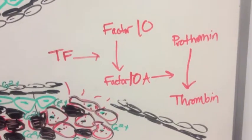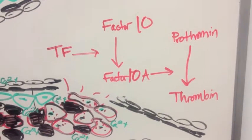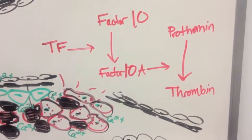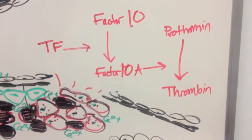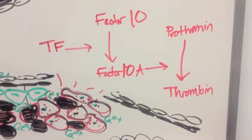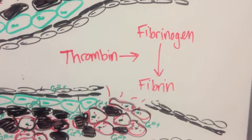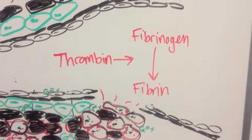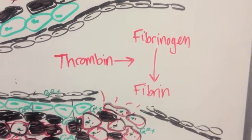Tissue factor activates clotting factor 10 to clotting factor 10a which then acts on prothrombin to become thrombin. Thrombin then acts on fibrinogen to become fibrin.